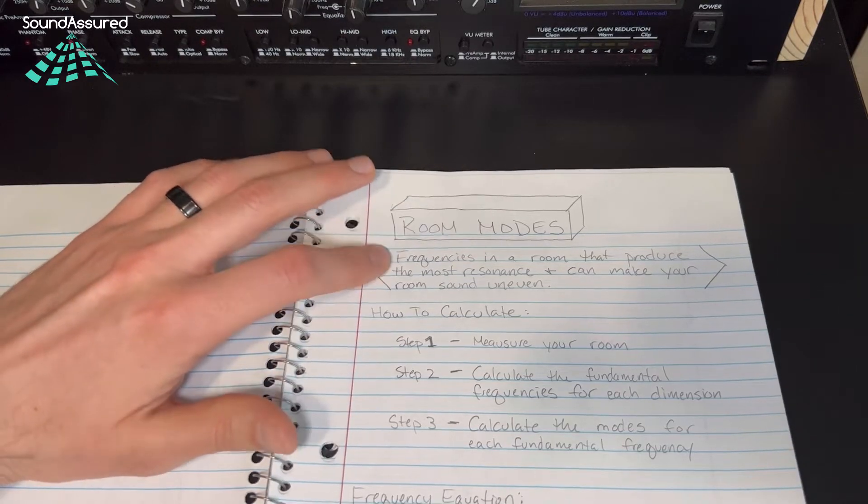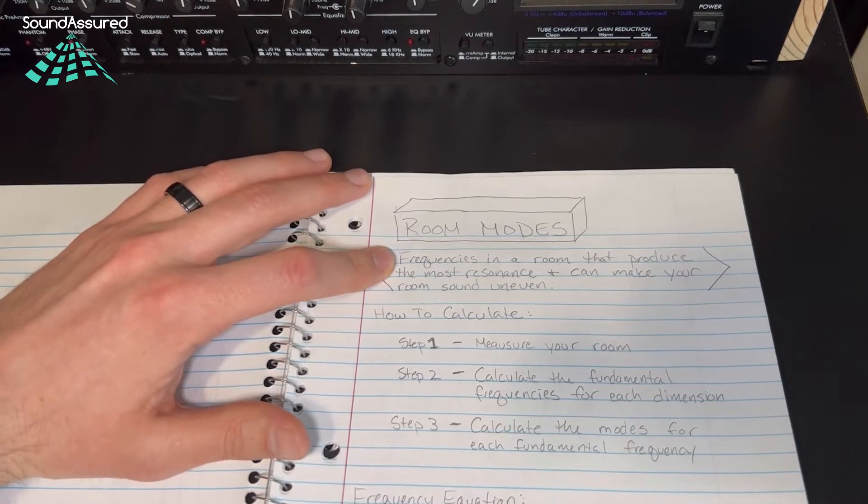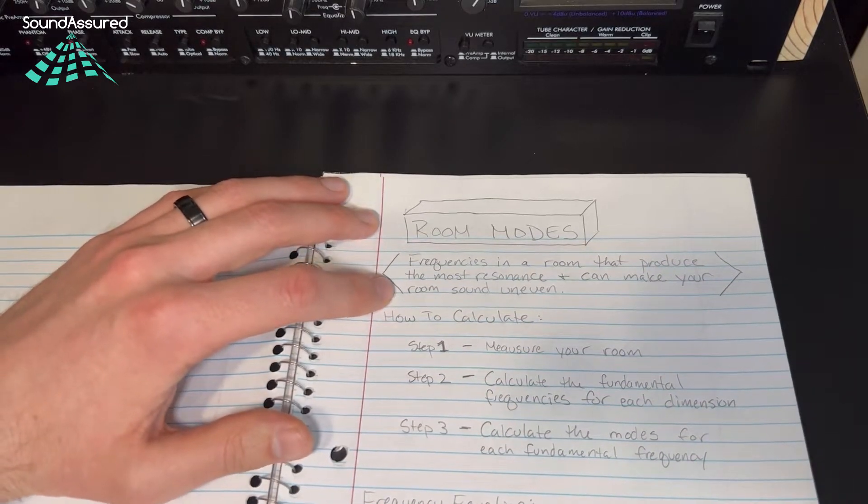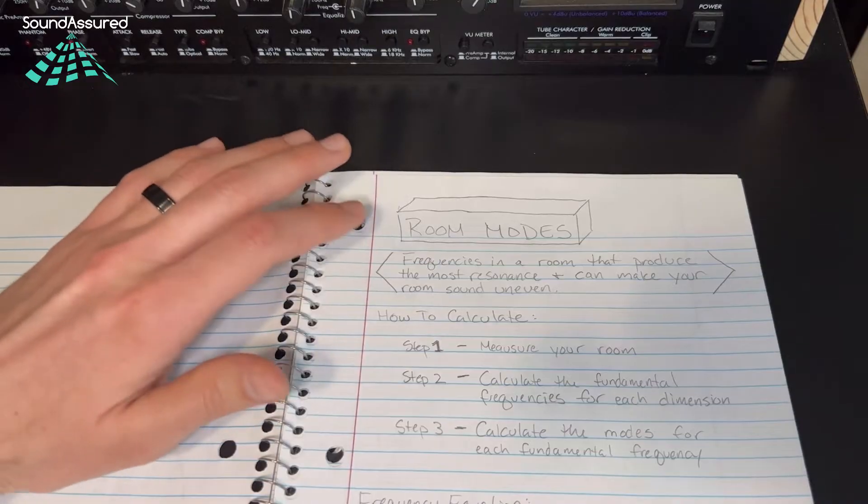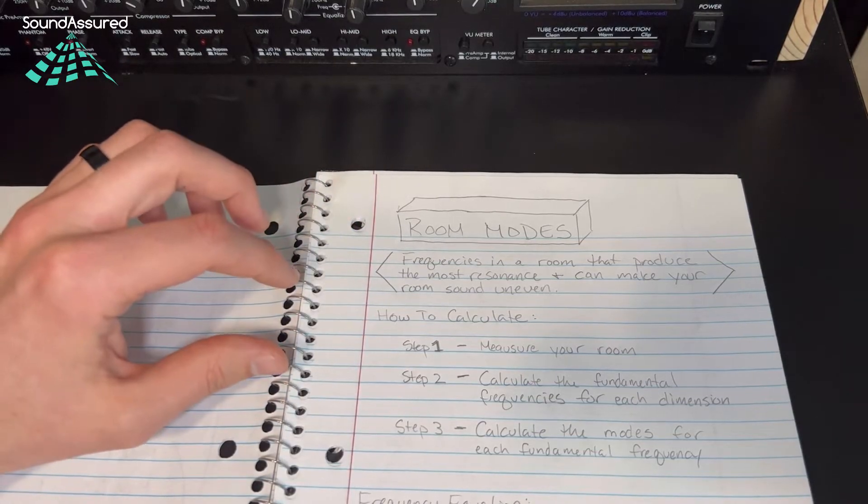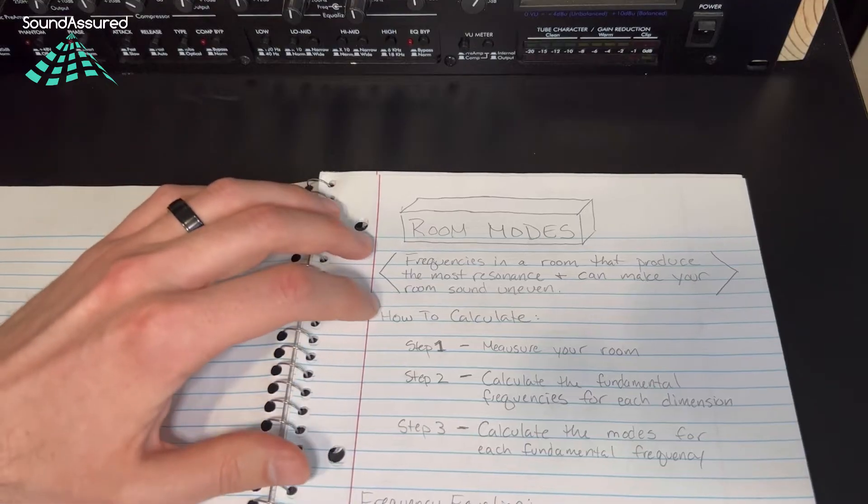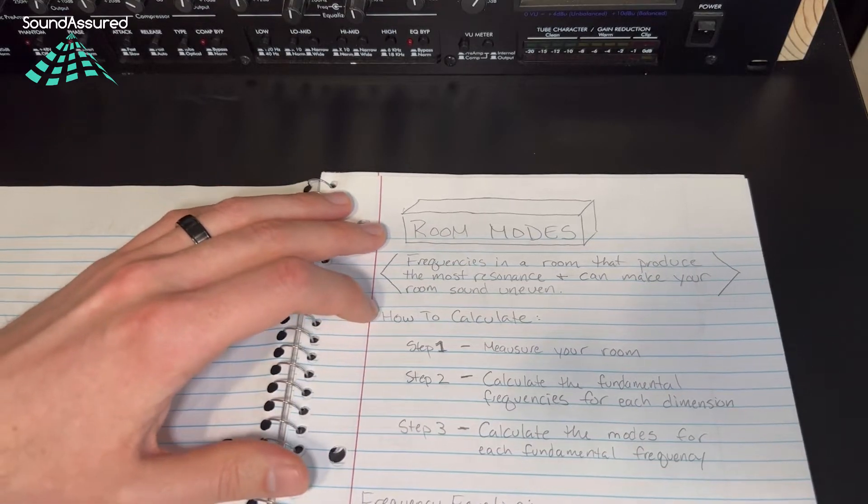What room modes are: they're frequencies in a room that produce the most resonance and can make your room sound uneven. This is dependent on the dimensions of your room. So each dimension, a four-foot dimension is going to have a different room mode than a two-foot dimension.